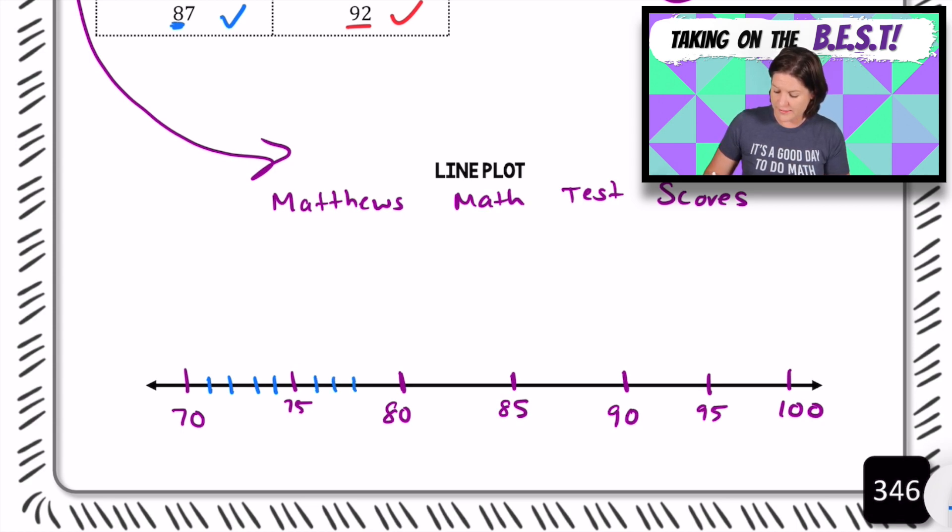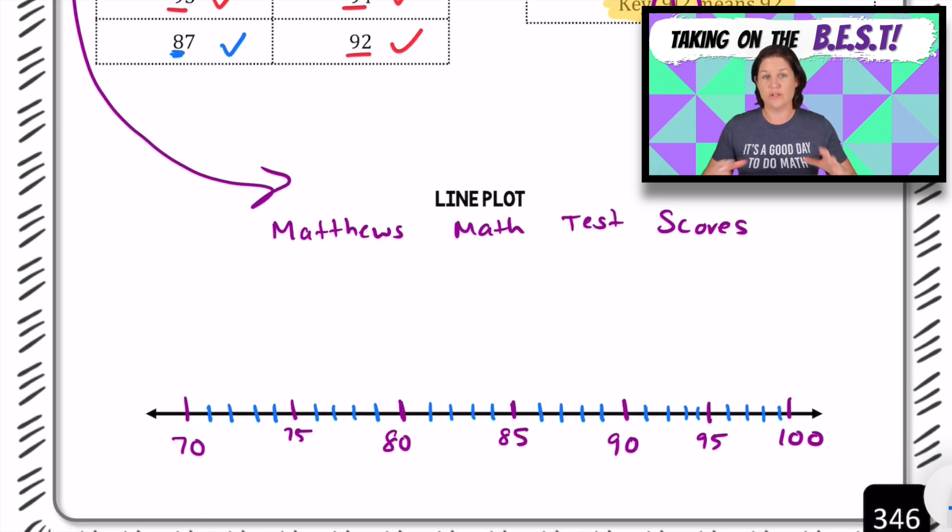We do need to have 71, 72, 73, 74, and then we have 75, 76, 77, 78, 79. And we have 80, 81, 82, 83, 84. And then we have 85, 86, 87, 88, 89. And then we have 90, 91, 92, 93, 94. And then we have 95, 96, 97, 98, 99, and then we have 100. You should have it broken into 10s with 10 little marks in between each one. Pause the video to make sure you have that recorded.